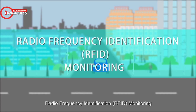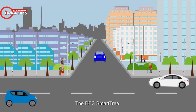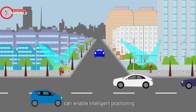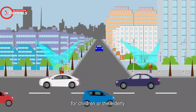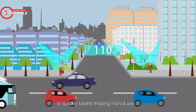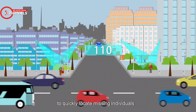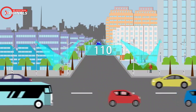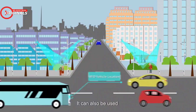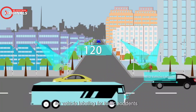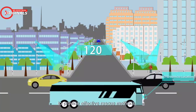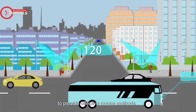Radio frequency identification (RFID) monitoring. SmartTree can enable intelligent positioning for children or the elderly to quickly locate missing individuals. It can also be used for vehicle labeling for traffic accidents to provide effective rescue methods.